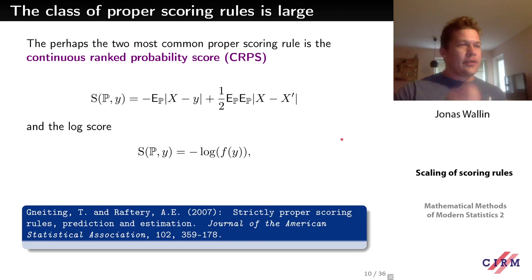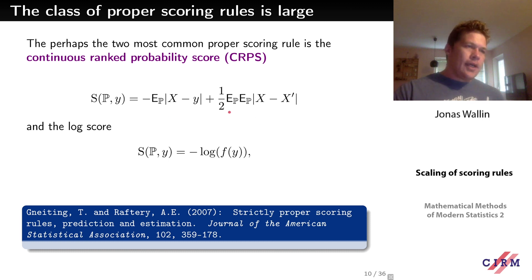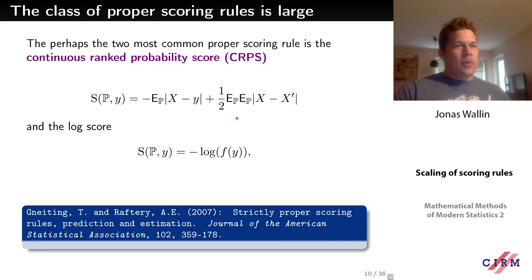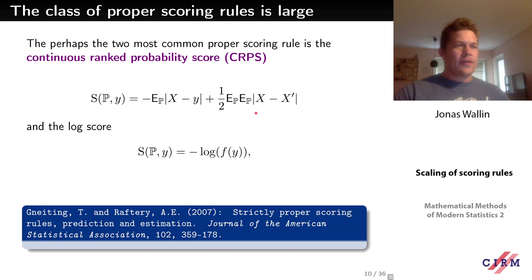Perhaps the most commonly used score, at least in weather prediction, is the Continuous Rank Probability Score (CRPS), given by the equation shown here. It gives the expectation of the difference between two independent random variables generated from the predicted distribution. The expectation of this scoring rule shows that we get penalized if we have large uncertainty, because the difference between two independent random variables from that distribution will be large.